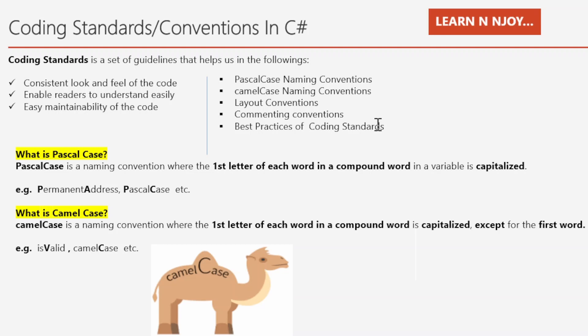Before jumping into Pascal case or camel case naming conventions, let's first understand what each is. Pascal case is a naming convention where the first letter of each word in a compound word is capitalized. For example, 'PermanentAddress' — the P of Permanent and A of Address are capital letters. Similarly, in 'PascalCase', both P and C are capitalized.